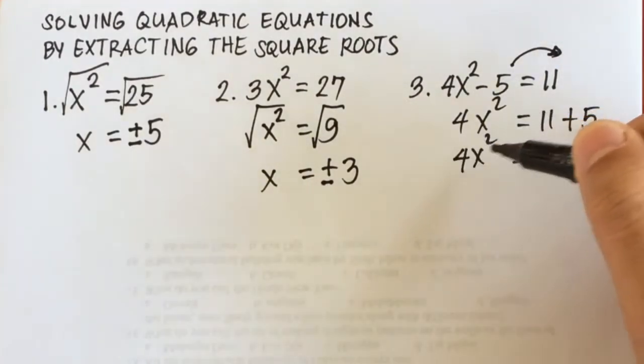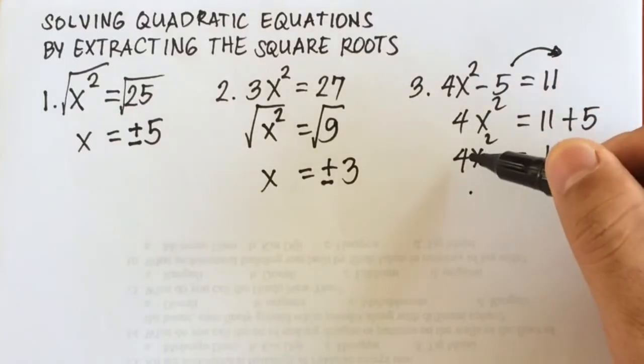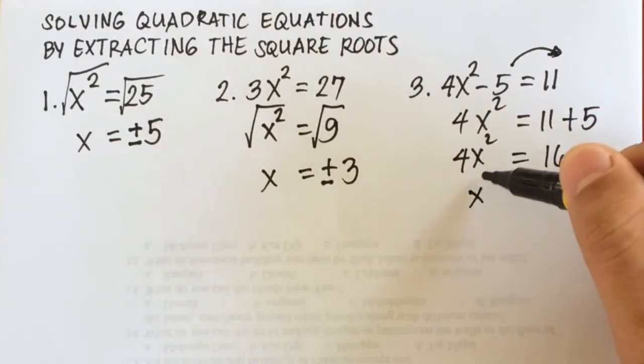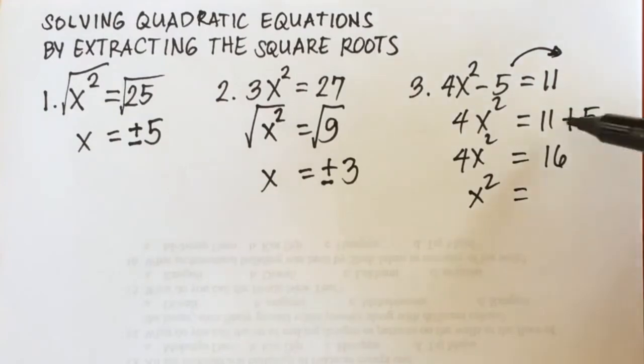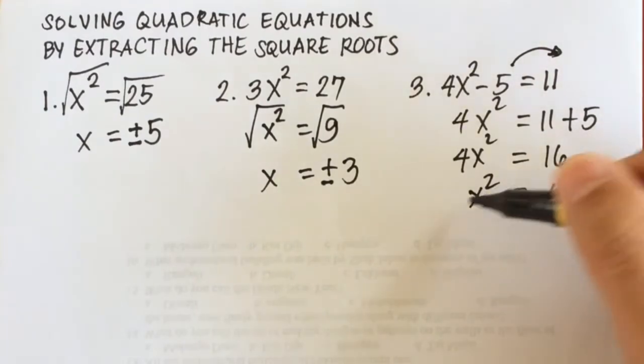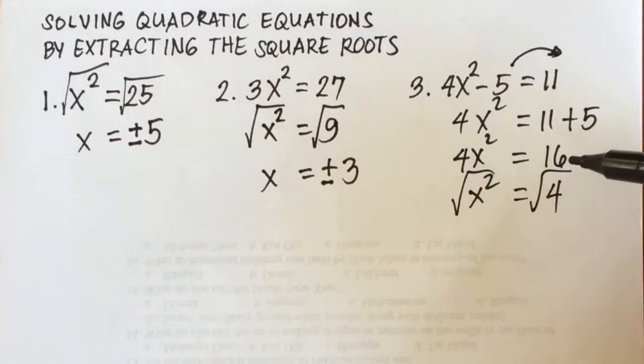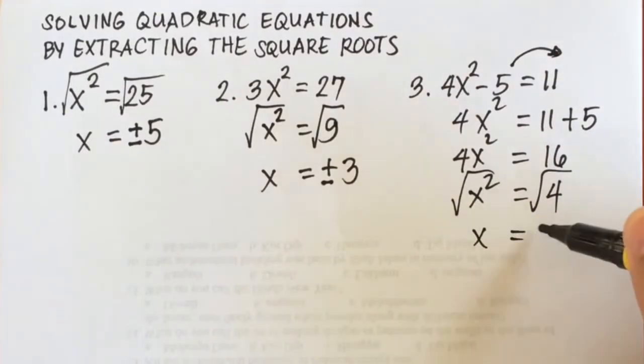Then, dividing both sides by 4. We're going to have 4x squared divided by 4 will be x squared. Then, 16 divided by 4 will be 4. Then, extracting the square roots. We have x equals positive negative 2.